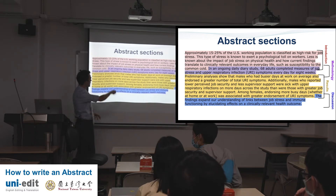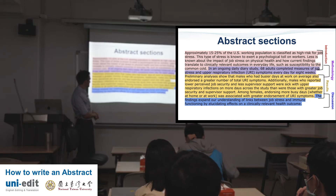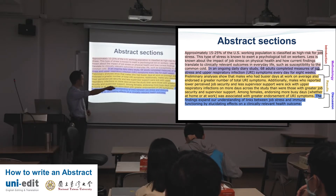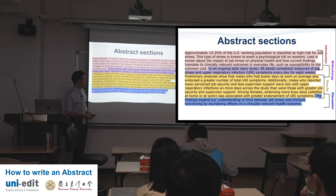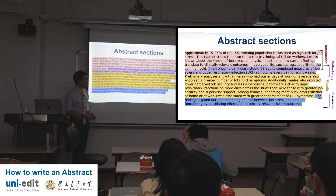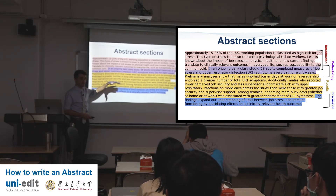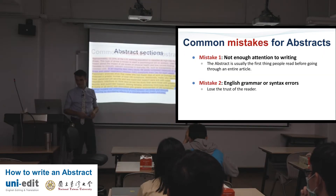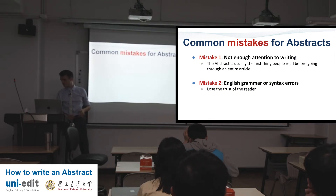This flow — the rest of this presentation is about this flow. It's very difficult to get this, but this is what we want. Common mistakes for abstracts. Mistake number one: not enough attention to writing. The abstract is usually the first thing people read before going through your article — it's the first impression. Some people rush the abstract, maybe copy and paste sentences. Don't do that.